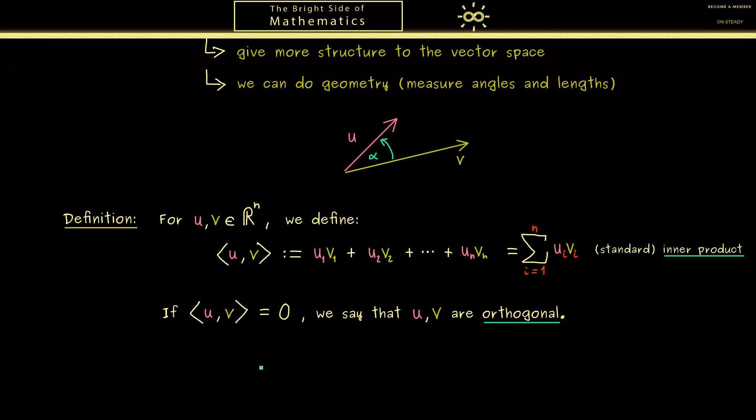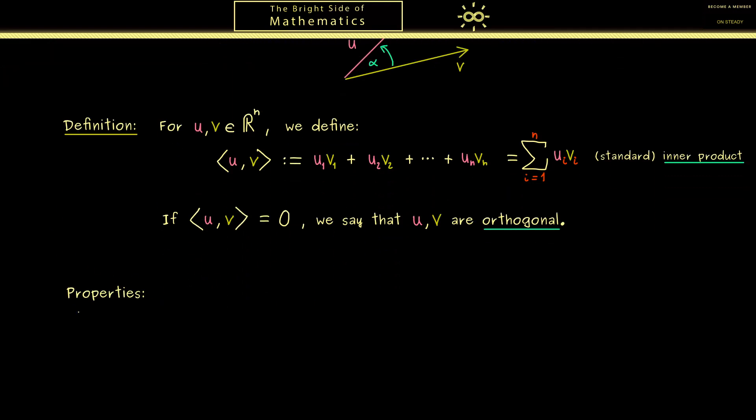Moreover I can already tell you that later we will also consider other geometries. For example if we consider more abstract vector spaces we can also consider more abstract geometries on them. In fact we could also consider strange geometries on R^n. Indeed this will be not so hard because we only need an abstraction for the inner product. And in order to do this we need to talk about the crucial properties of this inner product here.